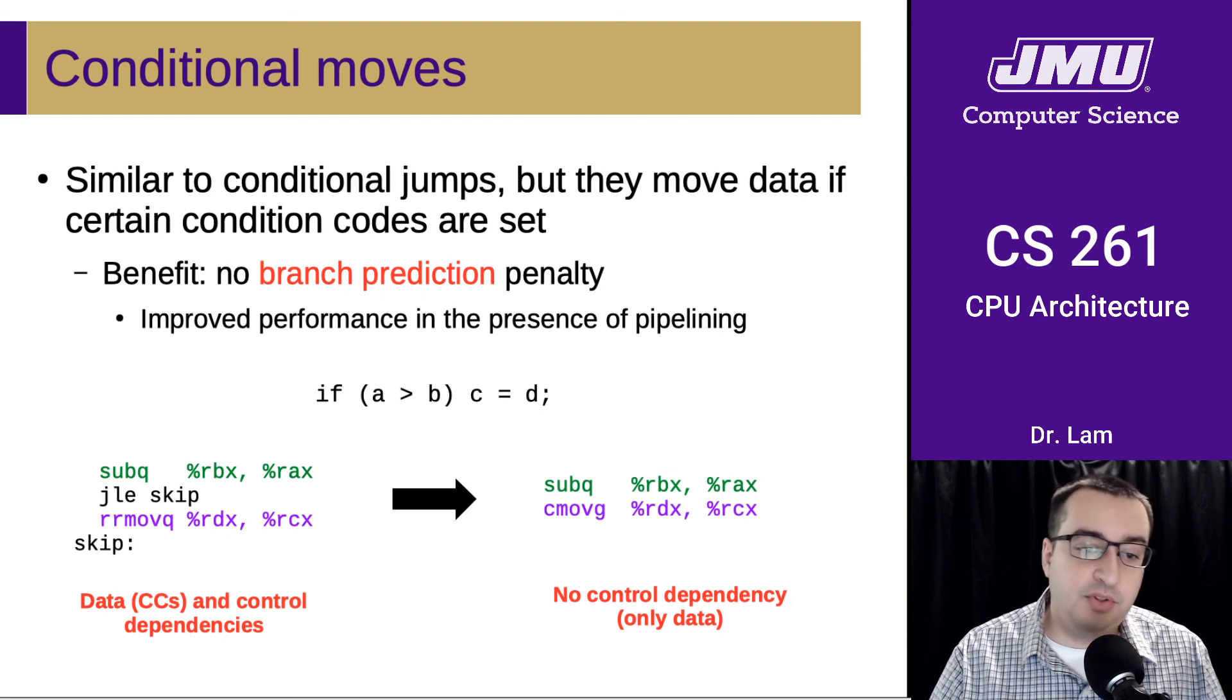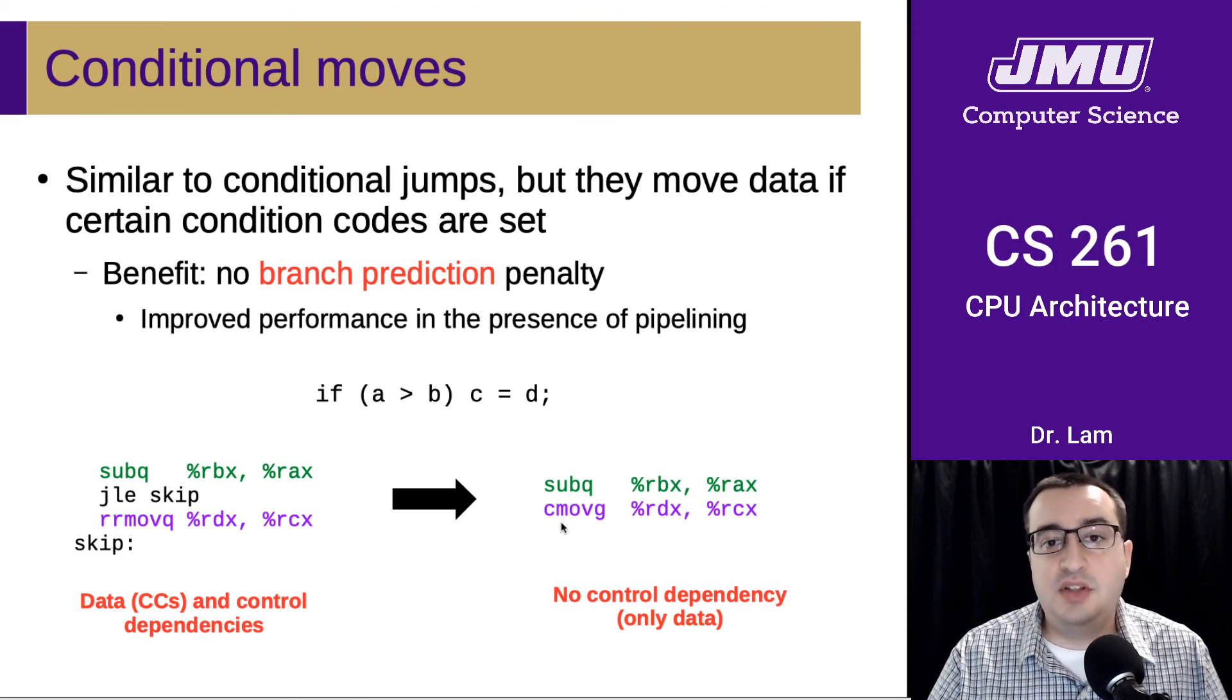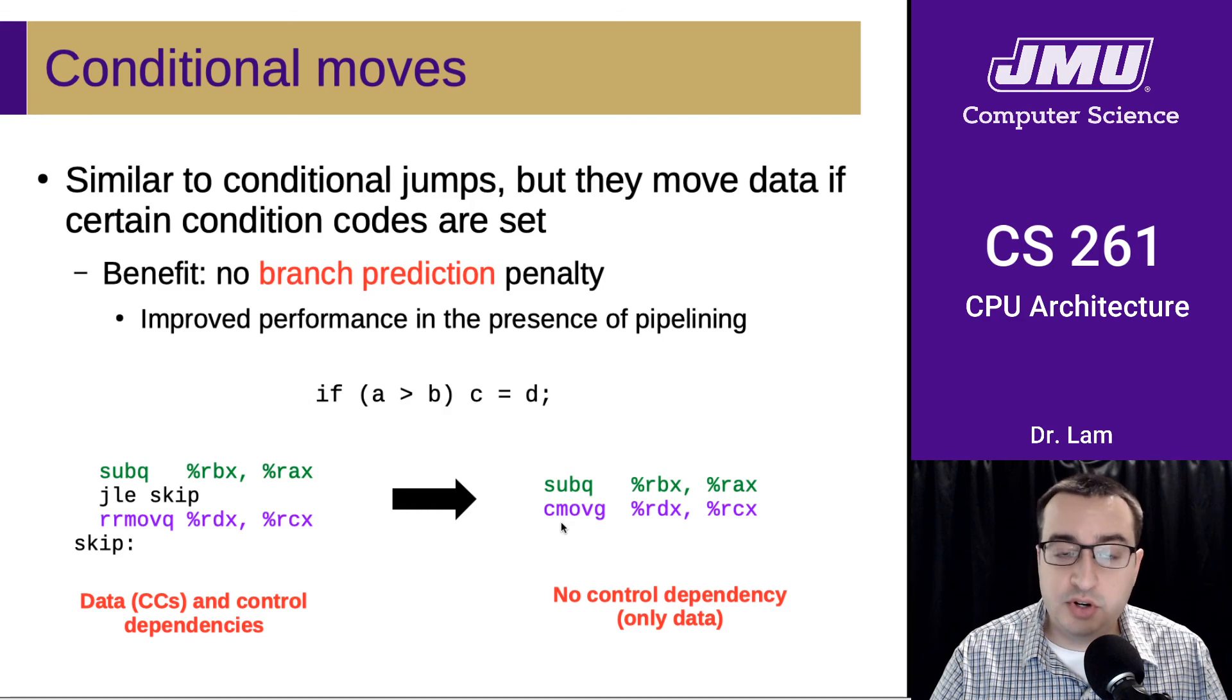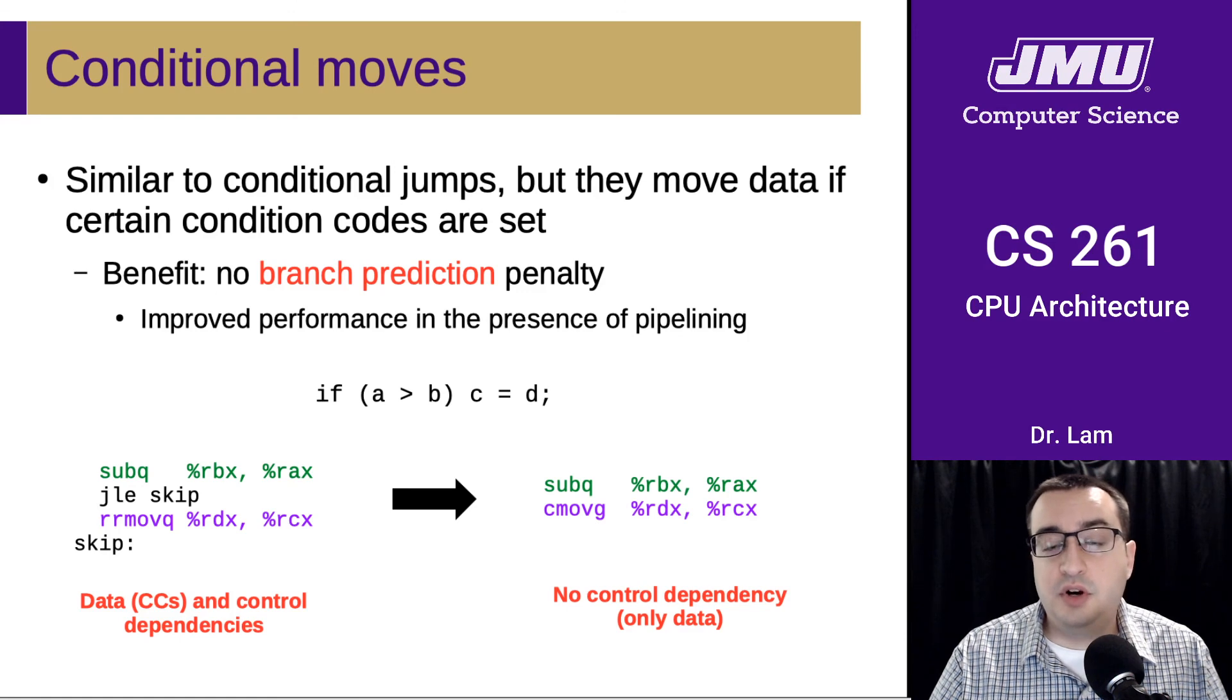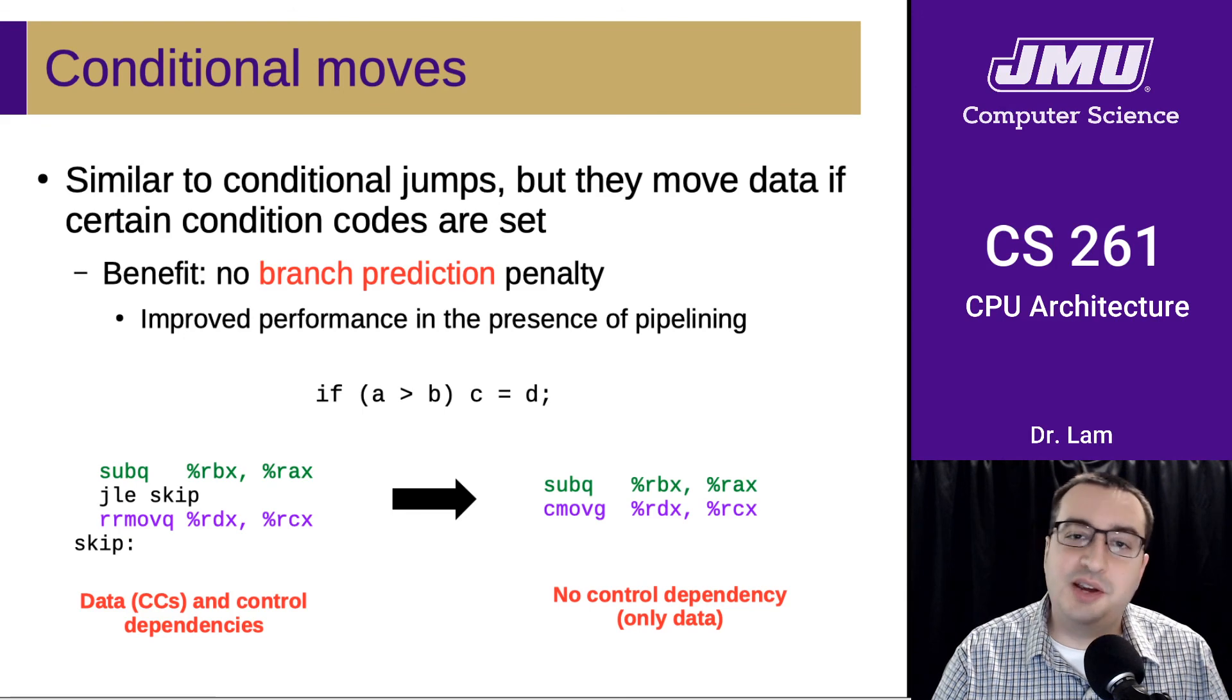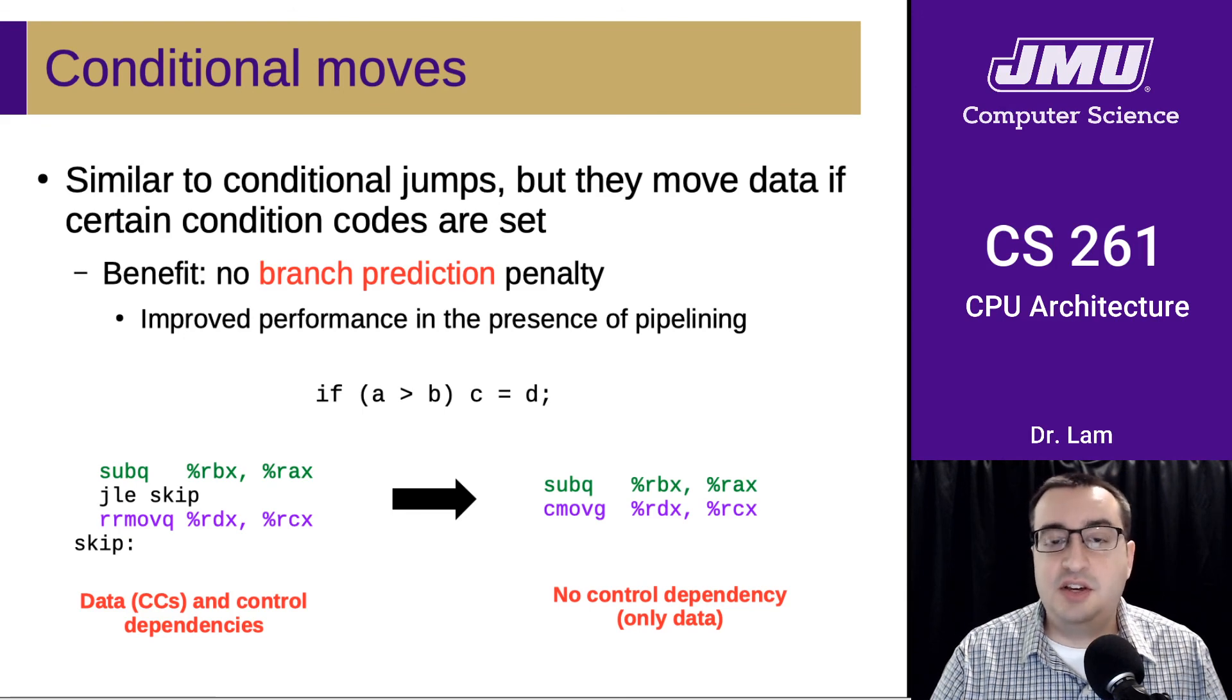Here's just a quick example. Here's some C code, and then what the C code would turn into in Y86 code using a conditional jump on the left hand side and a conditional move on the right hand side. You can see that not only is the code on the right shorter, but it also only has a data dependency regarding the condition codes. It doesn't actually have any control dependencies - we don't have to guess where we're going to go. So if we were going to execute these, it's likely that on a pipeline processor like most are these days, that the code on the right is going to on the whole execute faster than the code on the left.